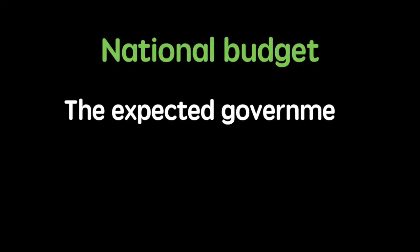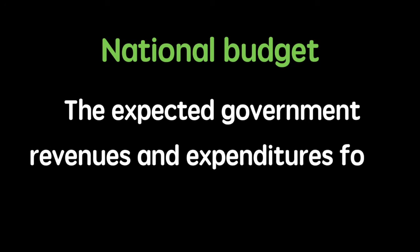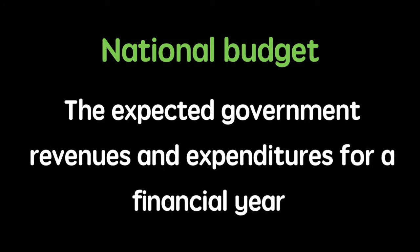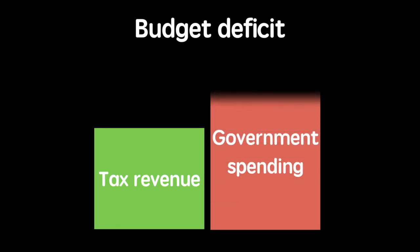At a basic level, the national budget is the expected government revenues and expenditures for a financial year. A budget deficit occurs within a year when government spending is greater than the amount of money collected as tax revenue.